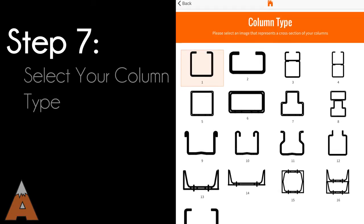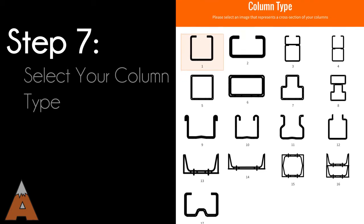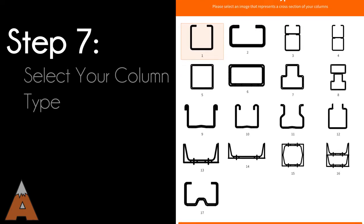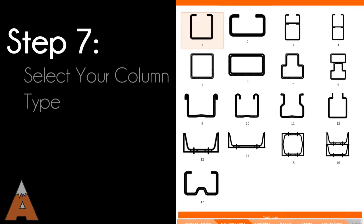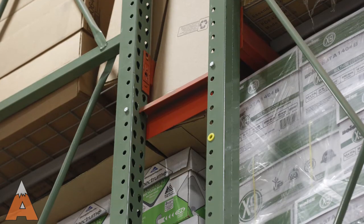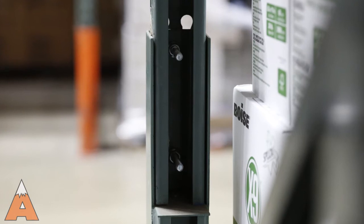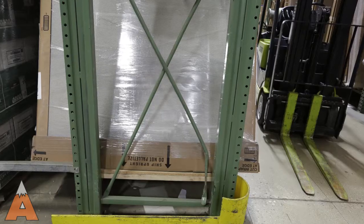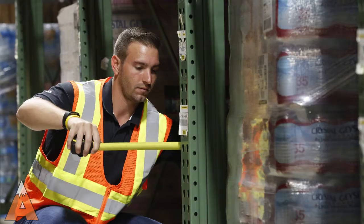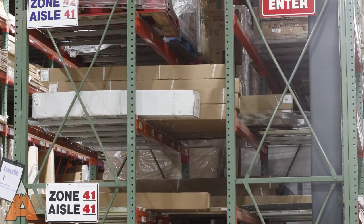Using the chart provided in the app, select the column style that matches the damaged column. If you select a column with a seismic backer, you will be prompted to provide backer location details. Backers are essentially two columns attached back-to-back for greater impact resistance and capacity, as well as to reinforce the frame against seismic activity.